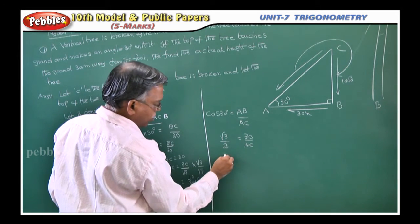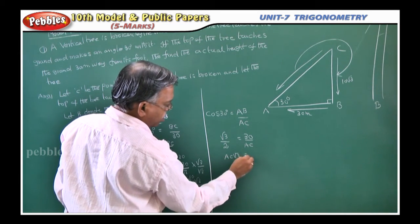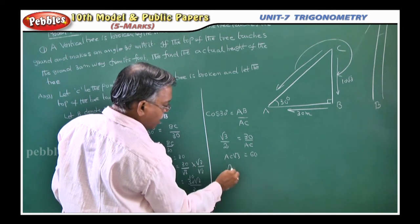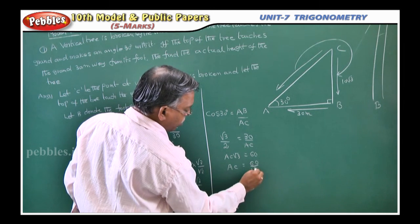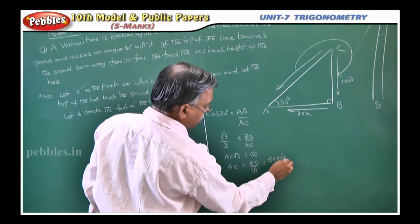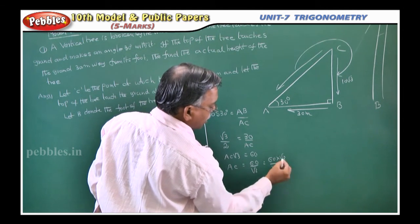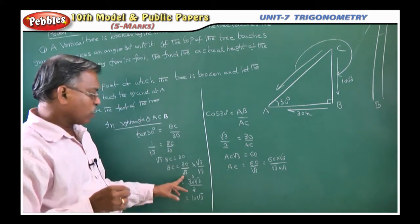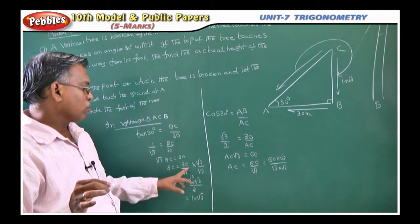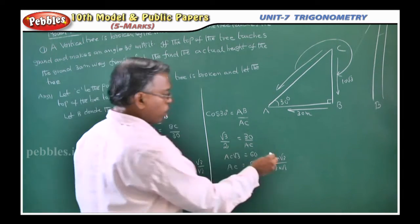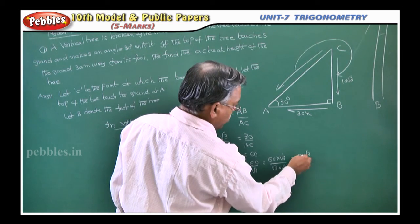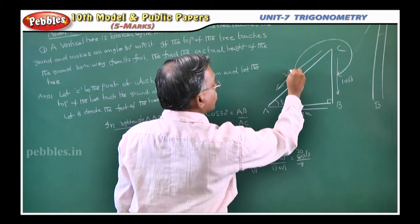We don't know that, we have to find. Cross multiply: AC into root 3 is equal to 60. What is AC? 60 divided by root 3. Again you rationalize: 60 into root 3 by root 3 into root 3. Rationalize means you have to get rid of root in the denominator part. You multiply with root 3 both numerator and denominator. Now it becomes 60 root 3 by 3, so 20 root 3. This part is 20 root 3.